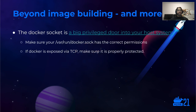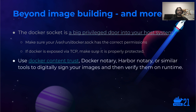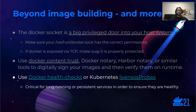Threats are present even before you build your first image. The Docker socket itself is a big privileged door into the system where the Docker daemon is running — having access to the Docker socket, you can execute privileged commands on the host system. So make sure the permissions for /var/run/docker.sock are correctly set, and if the socket is being exposed via TCP, protect it. Regarding distribution, container images can be digitally signed using Docker Content Trust, Docker Notary, Harbor Notary, or similar tools, allowing you to instruct your runtime to only allow trusted images. Finally, Docker and Kubernetes offer health checks or liveness probes to verify that the application is alive and working correctly — use them, especially for critical long-running processes, so they are automatically restarted in case of malfunction.